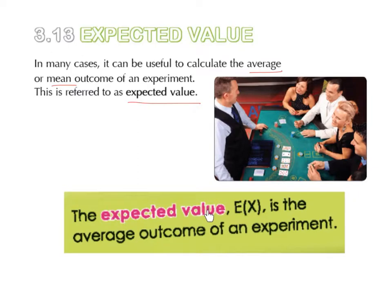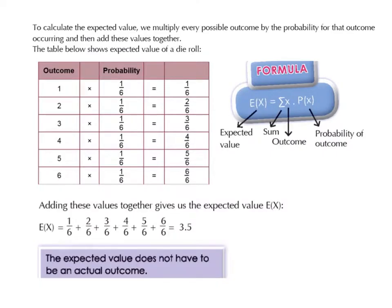The expected value, or EX, is the average outcome of an experiment. To calculate the expected value, we multiply every possible outcome by the probability for that outcome occurring, and then add these values together.